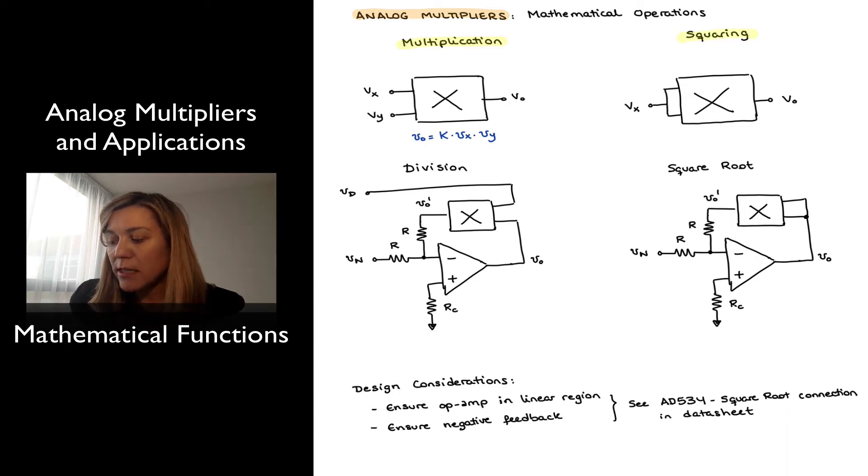Squaring a signal, or computing the square of a signal, is simply achieved by applying the input signal, the same input signal, to both inputs. So I've represented it here, where vx is applied to the two input signals of the multiplier, and in that case the output will be proportional to the product of the input signal times itself, or the input signal vx squared.